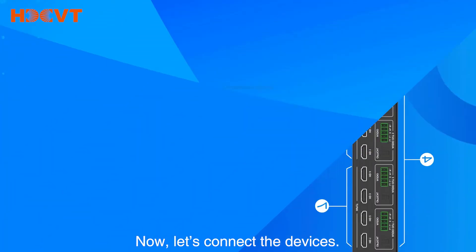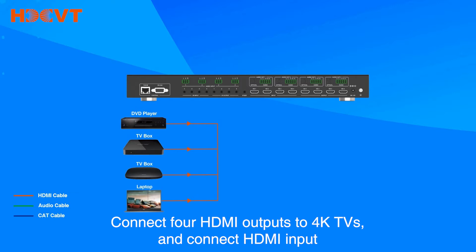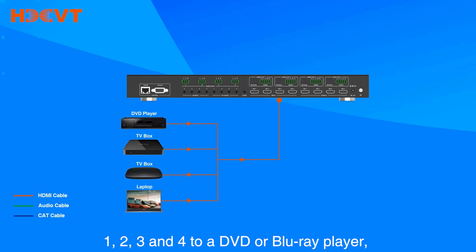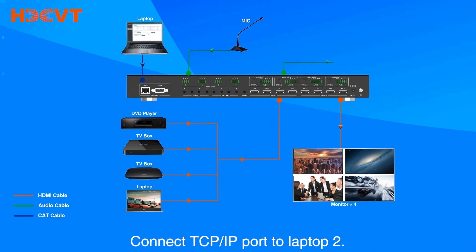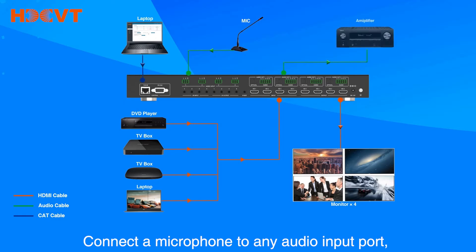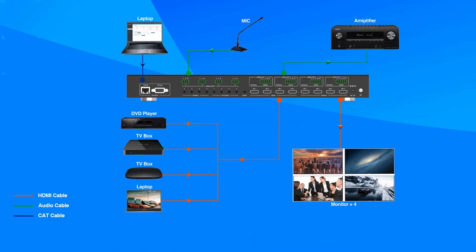Now let's connect the devices. Connect 4 HDMI outputs to 4K TVs, and connect HDMI inputs 1, 2, 3, and 4 to a DVD or Blu-ray player, laptop 1, and 2 TV boxes respectively. Connect the TCP/IP port to laptop 2. Connect a microphone to any audio input port and an amplifier to any analog audio output port.